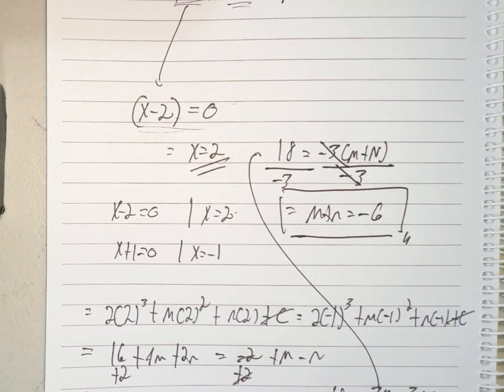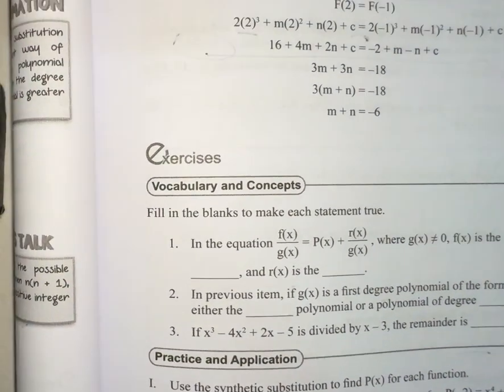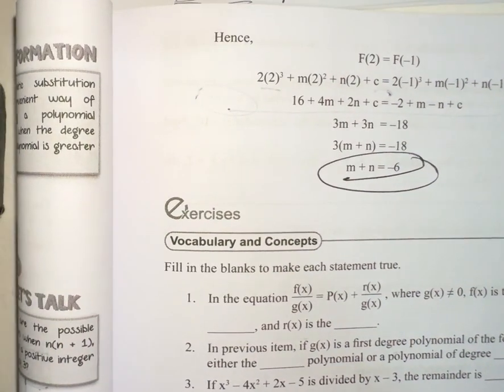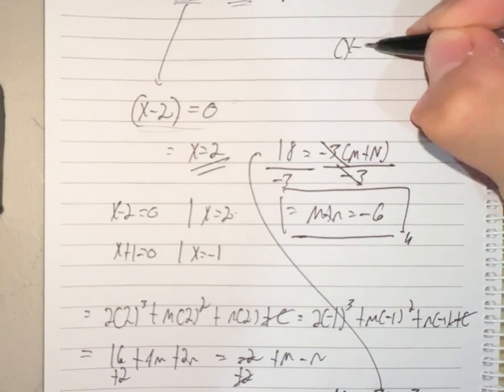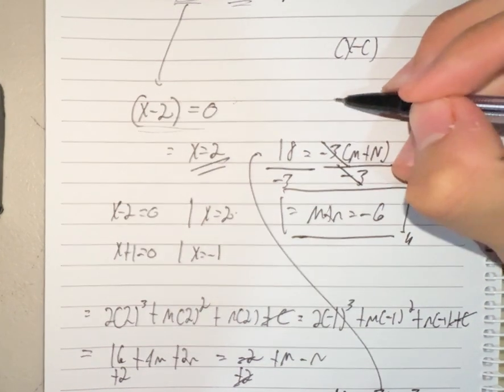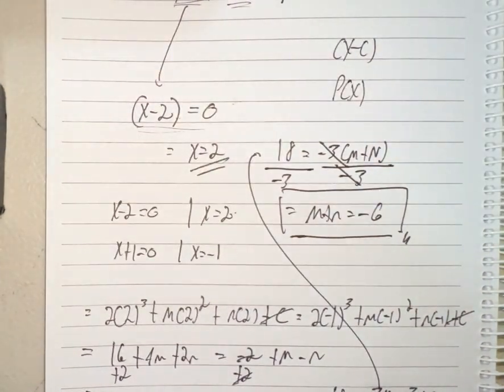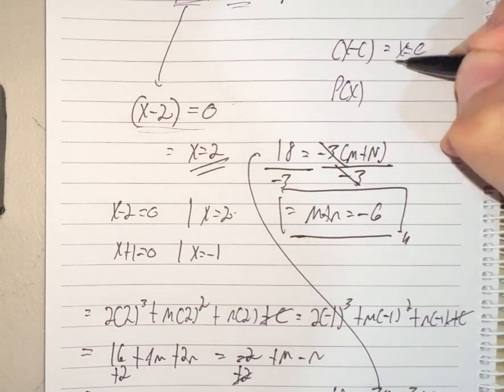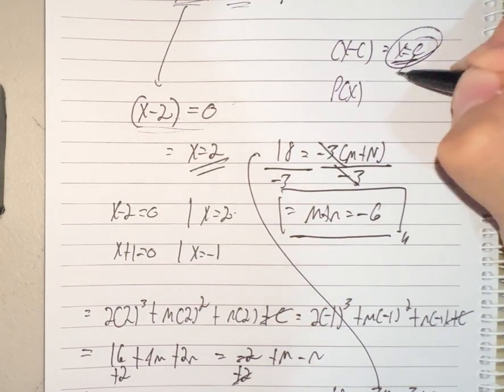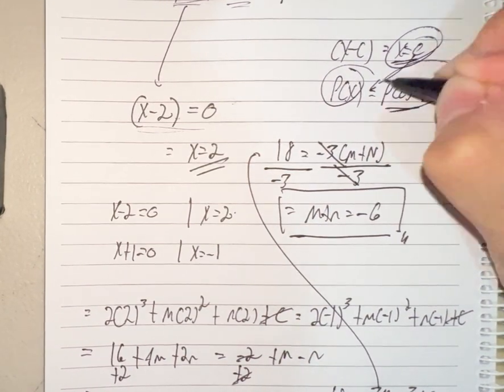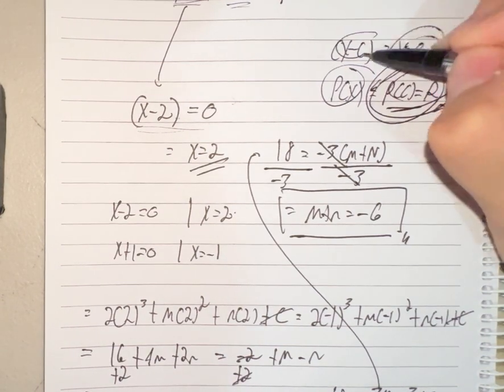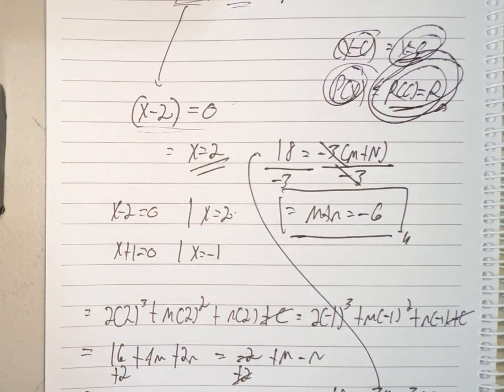And yeah, we basically proved that m plus n equals negative 6, as said in the book as well. So basically, that's the whole concept of the remainder theorem. If we have a binomial represented by x minus c and any polynomial expression p of x, the zero of the binomial expression, x equals c, if we substituted that into the function p of c, it's equal to the remainder of the function as if we divided this into this. That's it. Thank you for watching.